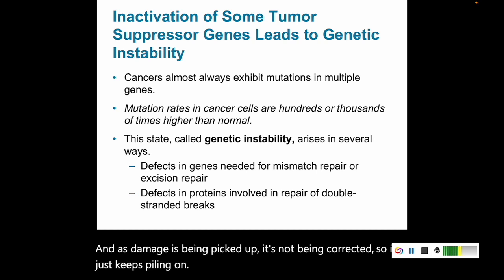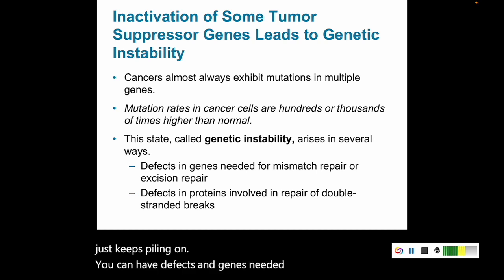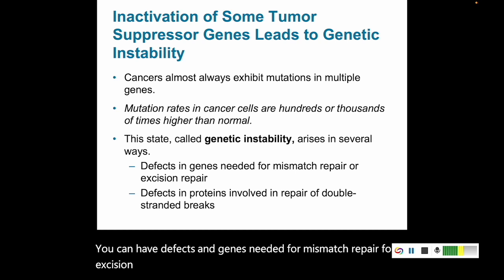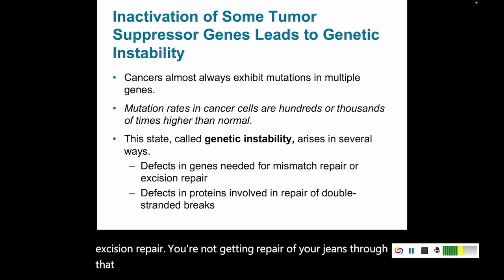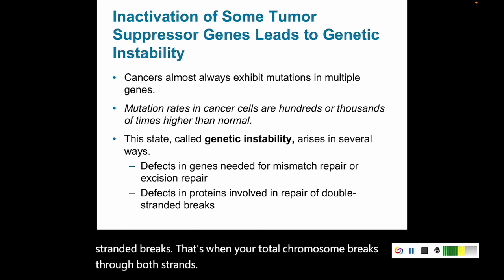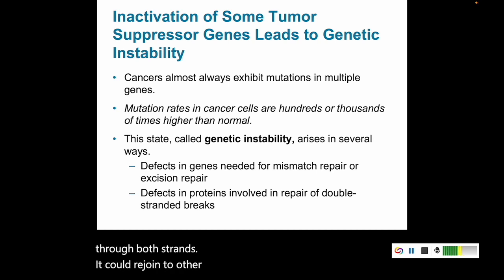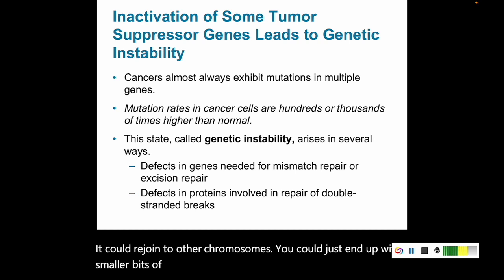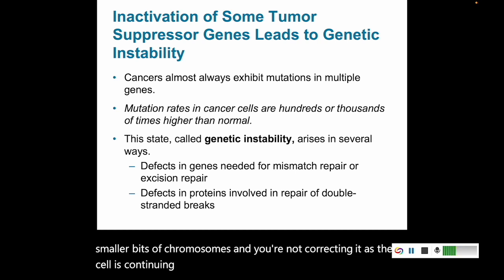You can have defects in genes needed for mismatch repair or excision repair, so you're not getting repair of your genes through those pathways. Defects in proteins involved in repairing double-stranded breaks — that's when your total chromosome breaks through both strands — can cause chromosomes to rejoin to other chromosomes or leave you with smaller chromosome fragments, and these aren't being corrected as the cell continues to go through the cell cycle.